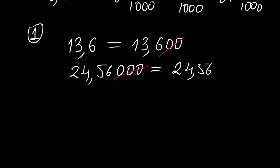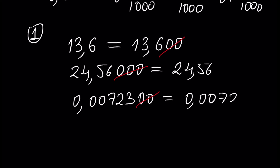For example, 0.000723 — the trailing zeros can be ignored. It's very important to know that the zeros before the last non-zero digit cannot be ignored or omitted, because we can only ignore zeros after the last non-zero digit which is after the floating point.